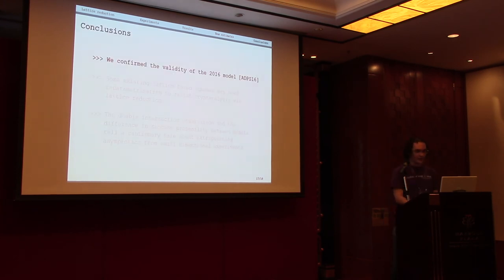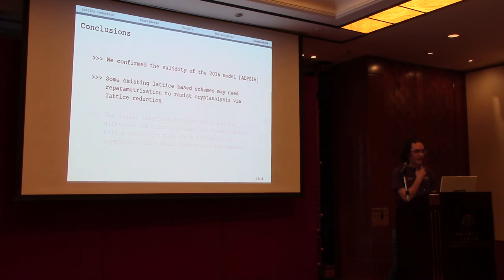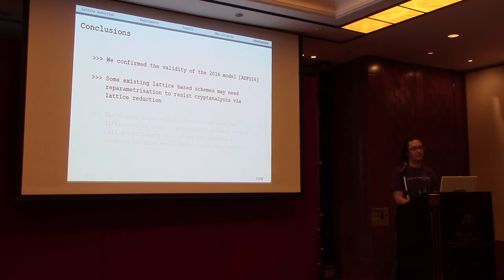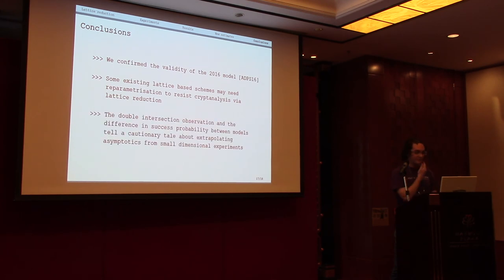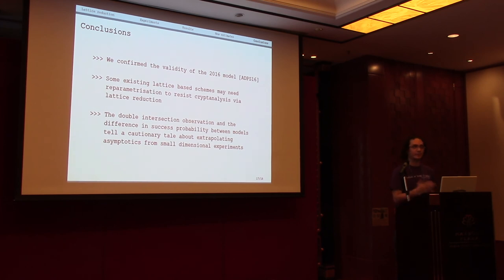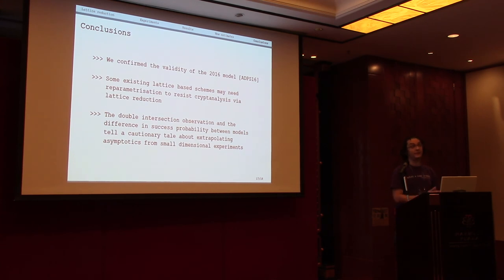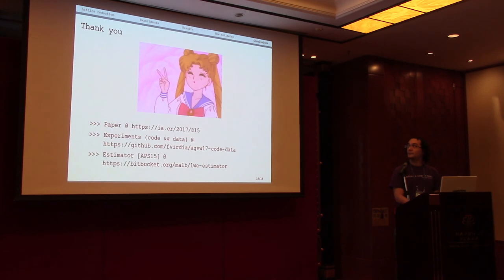In conclusion, we confirmed the validity of the 2016 model and believe it should be used for costing lattice reduction. Some lattice-based schemes may need reparametrization if they haven't considered this model, but reparametrization is usually cheap in terms of efficiency. The double intersection artifact serves as a cautionary tale about extrapolating asymptotics from small experiments — the 2008 model used experiments with block sizes around 20, which may be too small to draw reliable asymptotic conclusions.